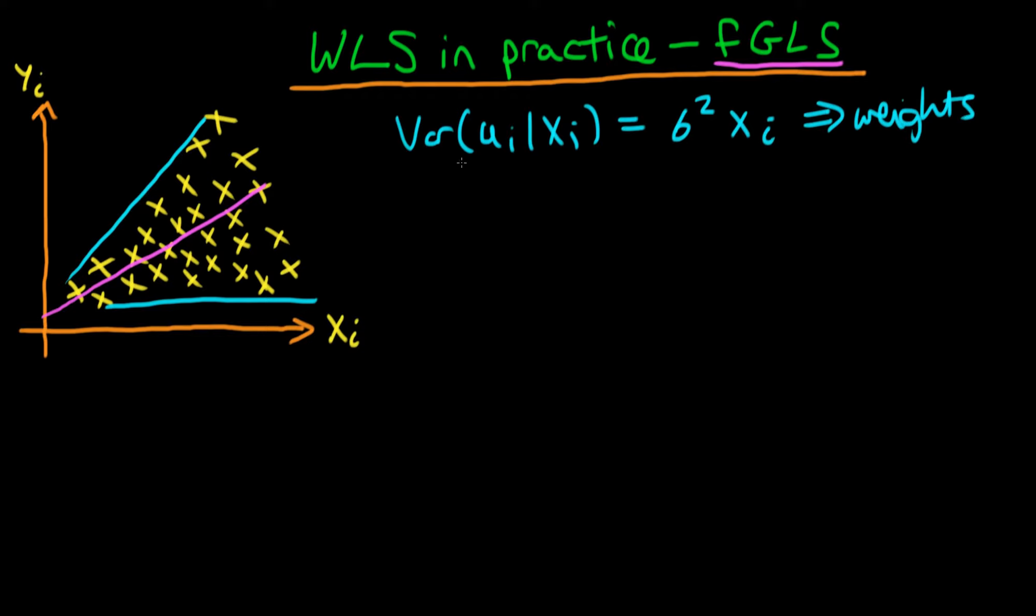In most cases we don't actually know this explicit form of the variance, so we actually have to go ahead and estimate the functional form of the variance. In order to do that we need to first of all specify a model for our variance.